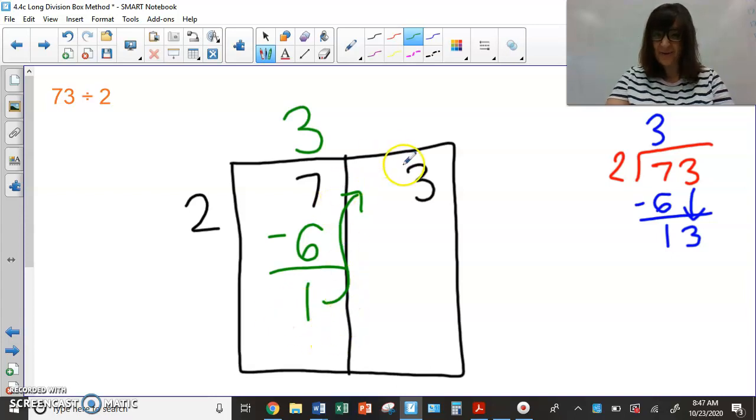Your next step, when you're doing the traditional method, is to bring down your three right here. So instead of doing that, we are going to take this one, and we're going to bring it over. This one is going to travel to the next box. So this is going to become 13, which is the exact same thing you would get if you were doing the traditional method. But instead of bringing it down and then going into this and coming around, we're just saying, okay, now my one goes into 13. So I did one box divided by two. Now I'm doing my second box divided by two. So I'm saying 13 divided by two.